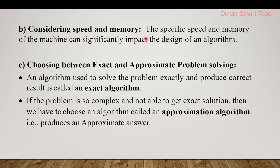Sequential means one after another; parallel means all at once. The second activity is considering speed and memory — the specific speed and memory of the machine can significantly impact the design of the algorithm, including how much time it takes and how much space is allocated. The third activity is choosing between exact and approximate problem solving. An algorithm that produces the correct expected result is an exact algorithm; if the problem is too complex, we choose an approximation algorithm that produces an approximate result.